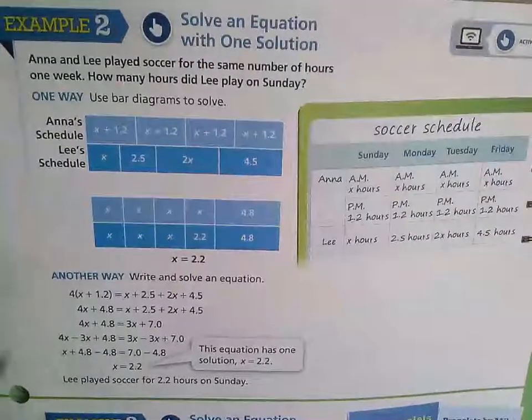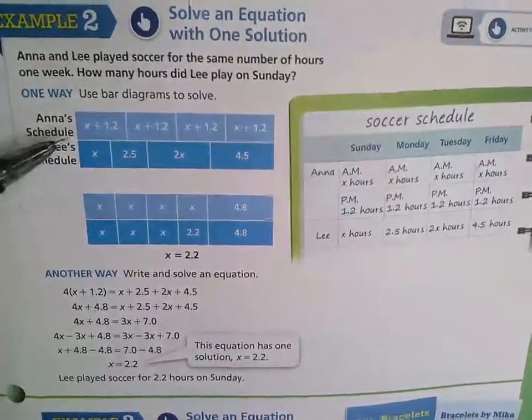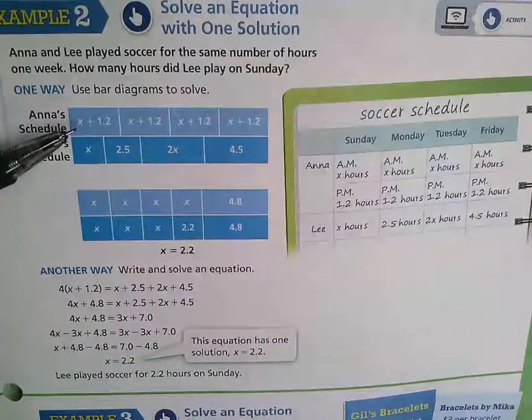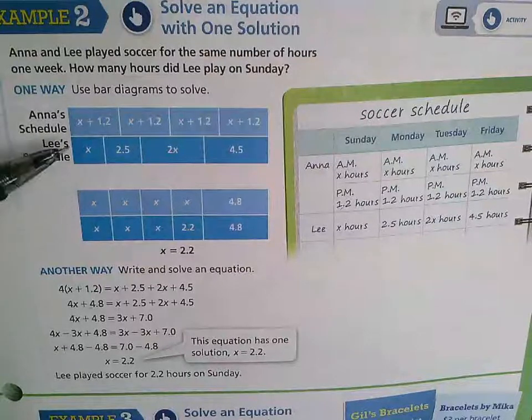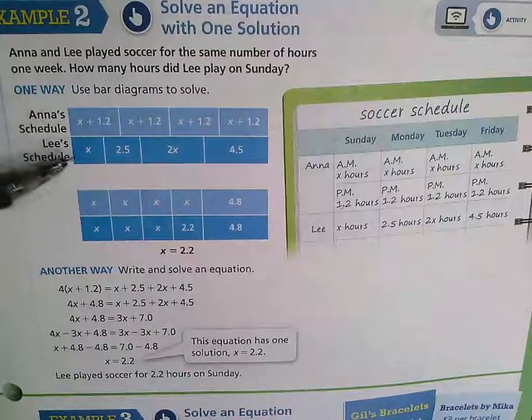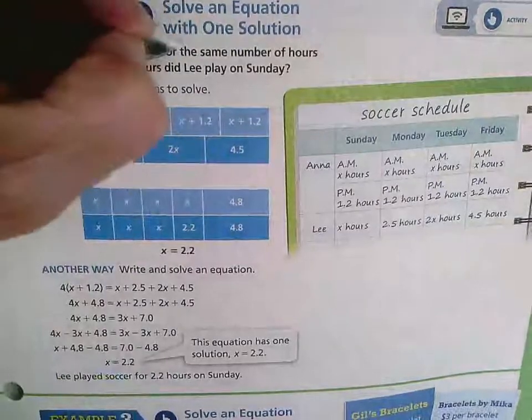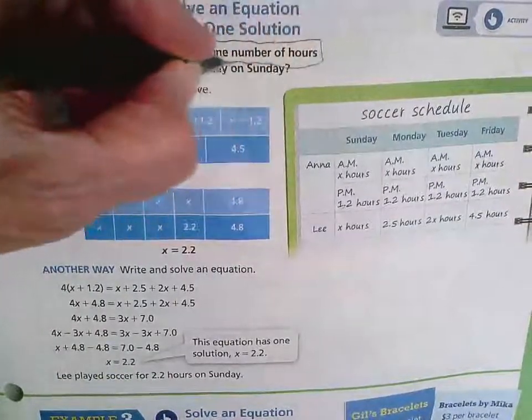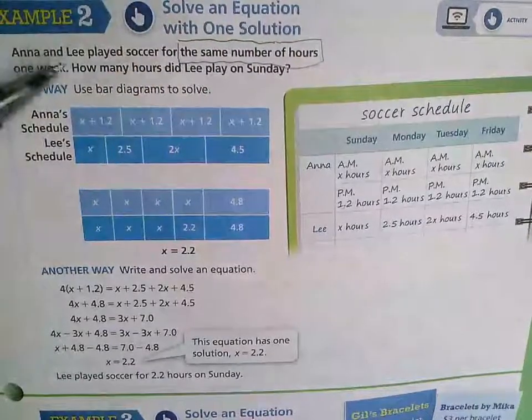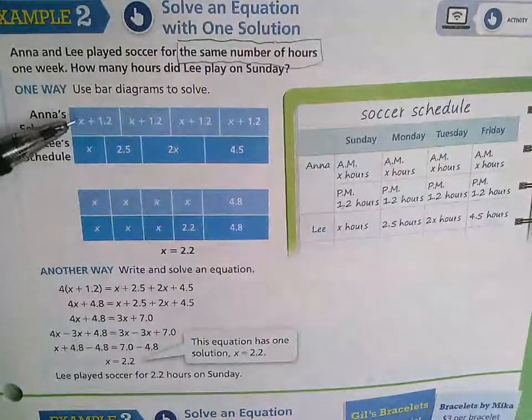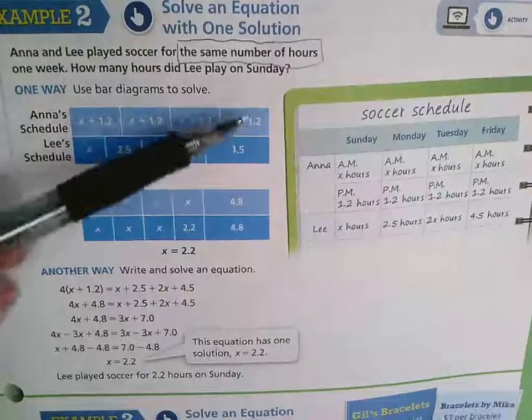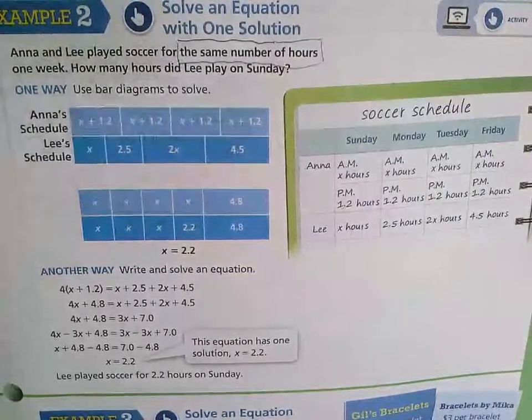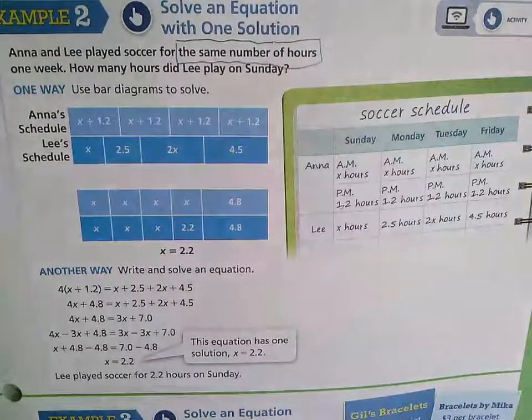So using the bar diagram showing the representation, Anna is the light blue and Lee is the dark blue. The clue is that they're talking about the same number of hours with two different people. So you have to have the bars the same length if they're going to be playing the same number of hours.